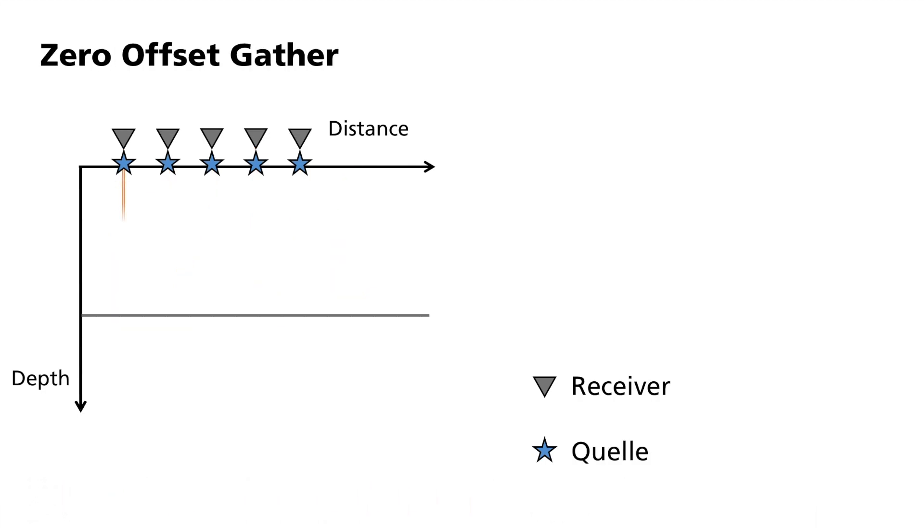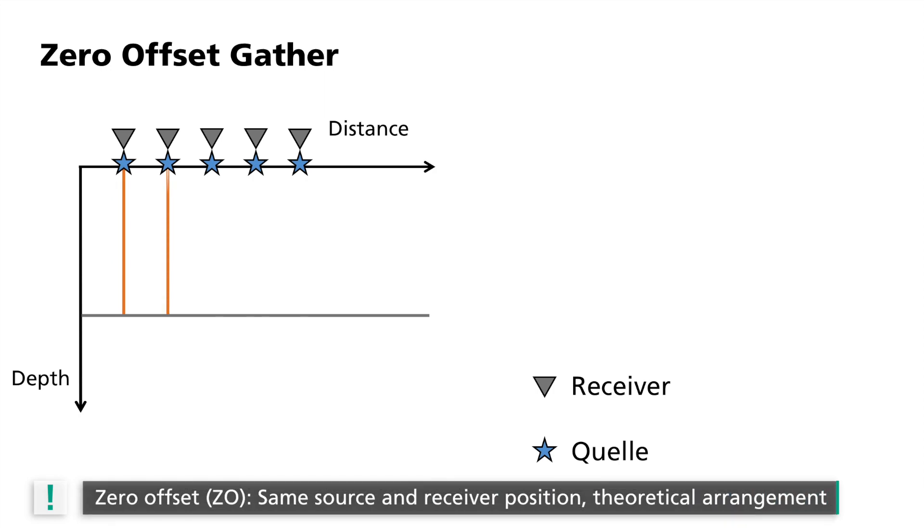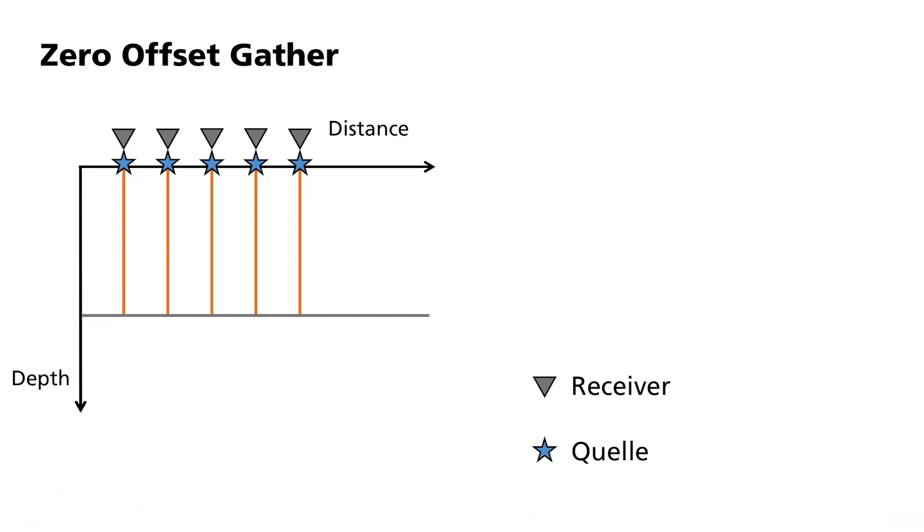A special variation of this is the zero-offset configuration. Here, the source and the receiver are located in the same position. This is merely a theoretical arrangement, since in reality it is impossible for the source and the receiver to be located in the same position.